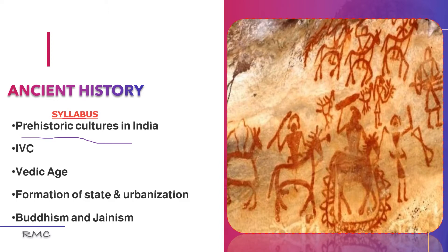What is the meaning of prehistory? Prehistory is the time before written records — that is called the prehistoric period. The prehistoric period is divided into three parts: first is the Stone Age, second is the Bronze Age, and third is the Iron Age. Out of these, today I will be discussing about the Stone Age.